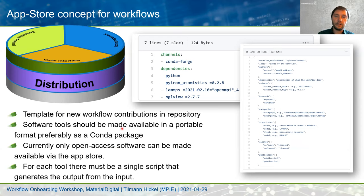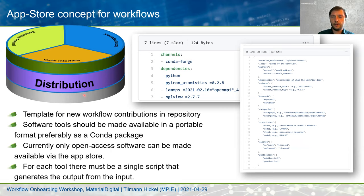When you add your workflow to the store, we will also ask you to add a file describing all the metadata of your workflow to make it easier to search and find, completing the information provided in the app store. By using open access channels like Conda Forge, we can currently only support open access software. This does not mean commercial software cannot run in the system — it just means you cannot distribute it as part of a software package. It must run under your own license, but it can of course be integrated into your workflow.